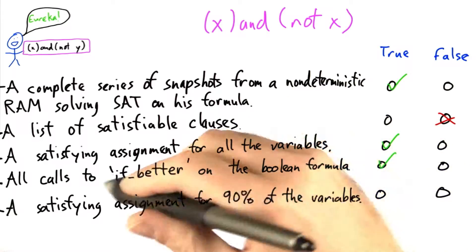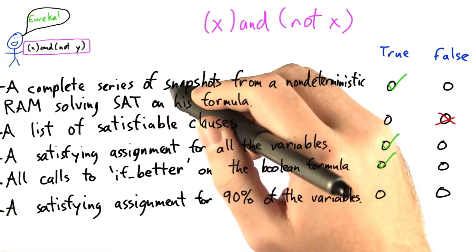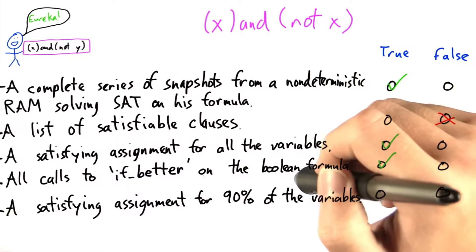So we could also check Bob's formula using just this, not even a complete series of snapshots is necessary, just the calls to if_better.